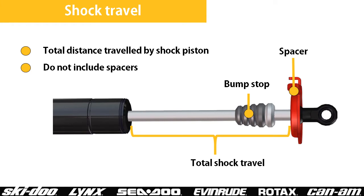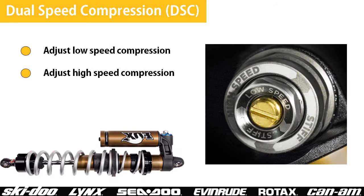Spacer thickness does not count towards total shock travel. With dual speed compression adjustments, you can adjust the shock's high and low speed compression damping by turning the adjusters. Dual speed compression allows you to optimize handling over small bumps while still having the extra damping required for a big impact. The vehicle's service documentation specifies the suspension's factory settings.